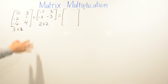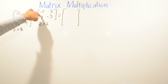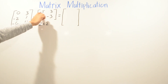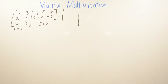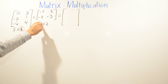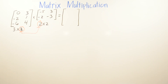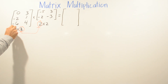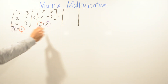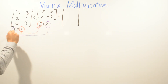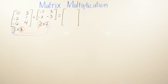For the third example, the first matrix is a 3 by 2 matrix — three rows and two columns. The second matrix is a 2 by 2 — two rows and two columns. We check: the second number of the first matrix and the first number of the second matrix are both 2, so we can multiply.